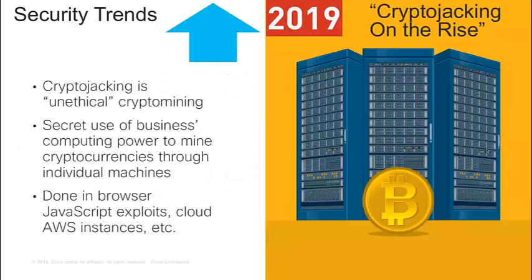Another trend we've seen a big spike on is crypto mining and cryptojacking — where professional and business infrastructures are used for cryptocurrency mining. From 2018 moving into 2019, we've seen malicious use cases in this area because there's less coordinated law enforcement around it. We're able to pick up this data because we see around 4 to 5 percent of all internet traffic, and we're supporting around 175 billion DNS resolutions a day.